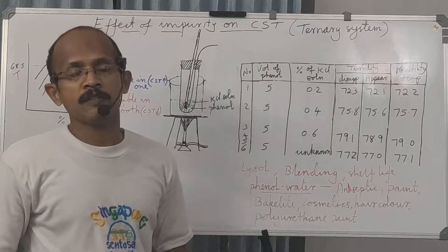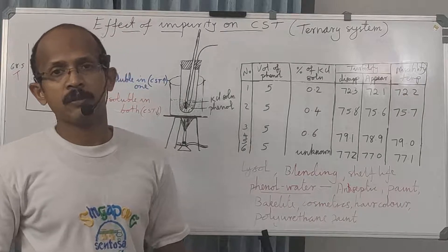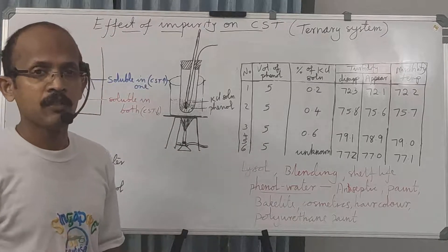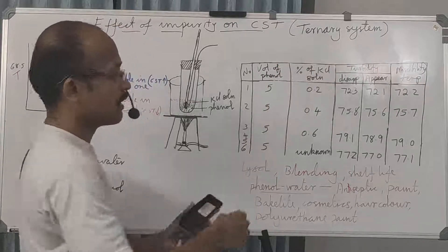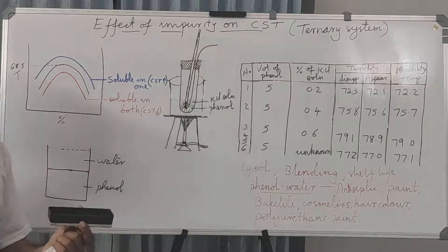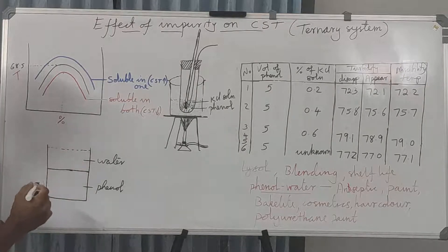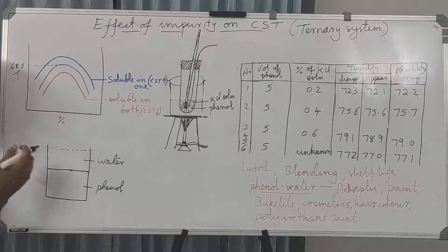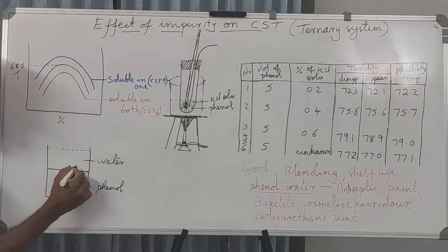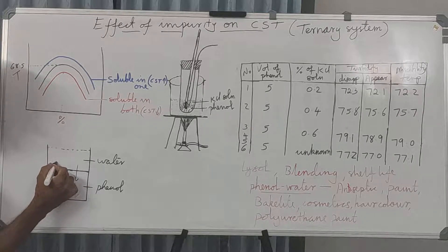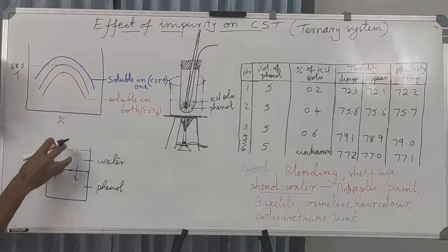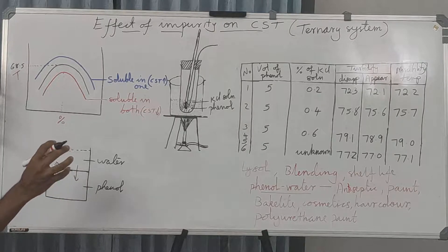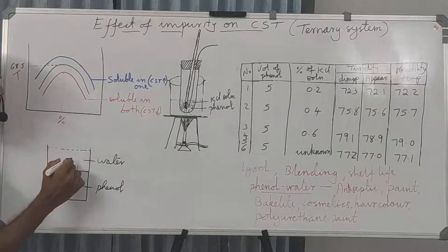We know that the phenol-water system is a partially miscible binary liquid mixture. If we are adding an impurity to a binary mixture, it will become a third component and the system will be a ternary system. Suppose this is a phenol layer and here it is the water layer. If we take phenol and water together, they are partially miscible — some water molecules will go to the phenol layer and some phenol molecules will go to the water layer. So the water layer will be saturated with phenol and the phenol layer will be saturated with water at that particular temperature and pressure. This is called conjugate solutions.